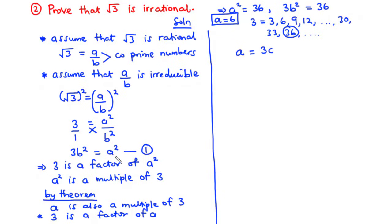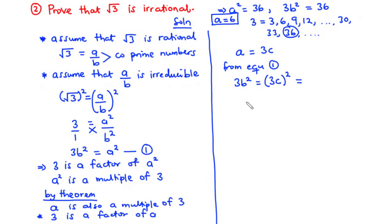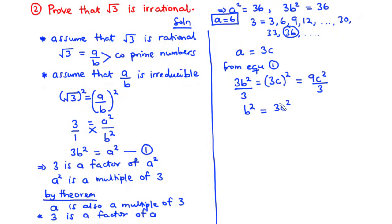Now let's put this into equation 1. From equation 1, we have 3b squared equals a squared. In place of a, we have 3c, so that becomes 3c all squared, and then we expand this to have 9c squared. Now, let's divide through by 3, and then we have b squared equals 9 divided by 3, which is 3c squared.